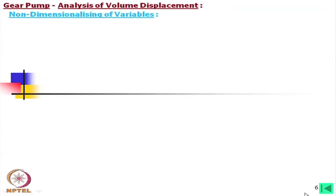Now we shall try to find out the volume displacement. If we can calculate the variation in this area with shaft rotation or with respect to time, then we can multiply by the width of this gear. In the case of a piston pump, we multiply a constant area with the variable stroke length. In the case of this gear pump, the area is varying and the width remains constant. So if we can analyze the variation of area with shaft rotation, we can easily find out the volume displacement and then the flow rate.